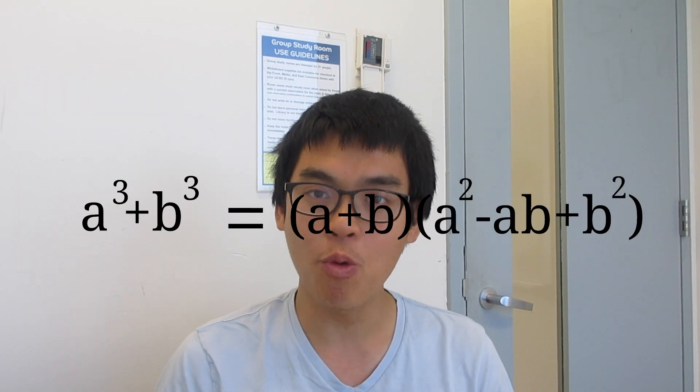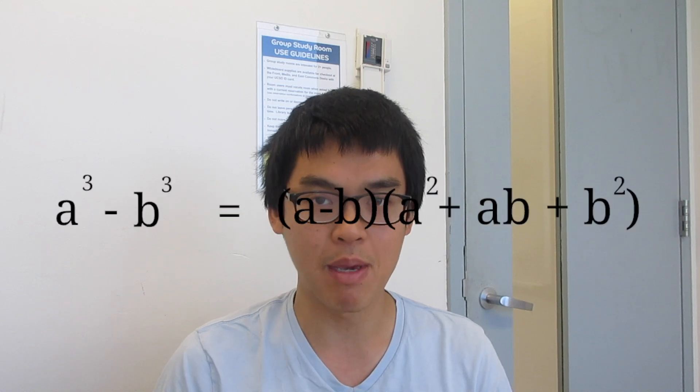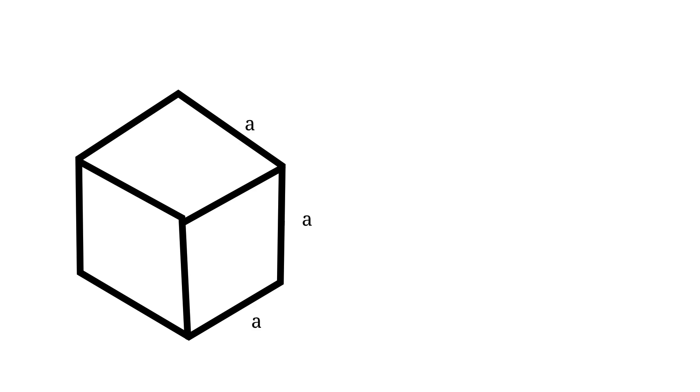All right, today we're gonna prove two math identities which are a³ + b³ and also a³ - b³. All right, so what's the motivation behind this? Think of it this way: If you have a cube, each side has length a, then the volume of that cube is just a³. If the length is b, the volume is b³.